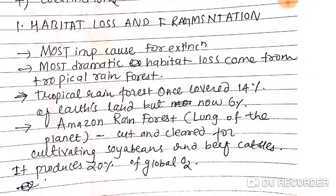First, let us see what is habitat loss and fragmentation. This is the most important cause for extinction. The most dramatic habitat loss comes from tropical rainforests. The tropical rainforest once covered 14% of the Earth's land, but now it covers only 6% of the Earth's land, causing many species to go extinct.